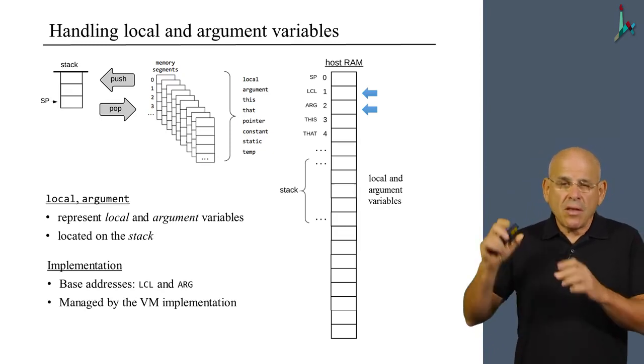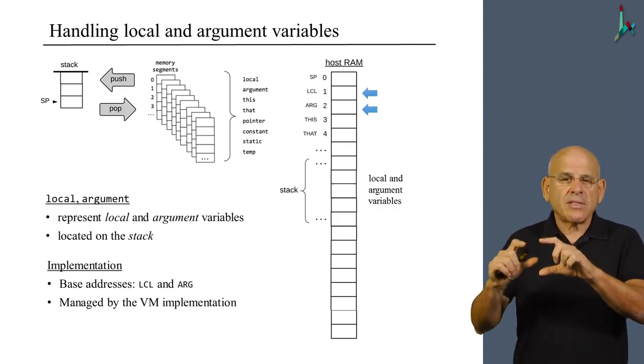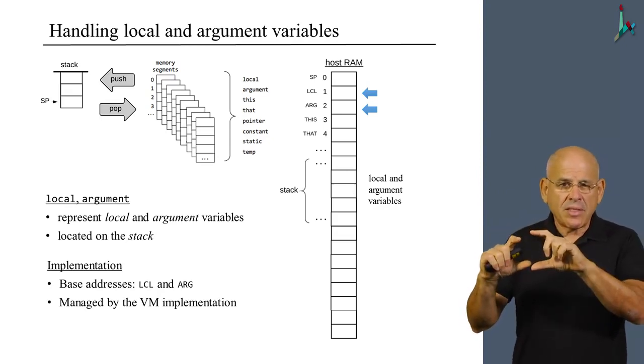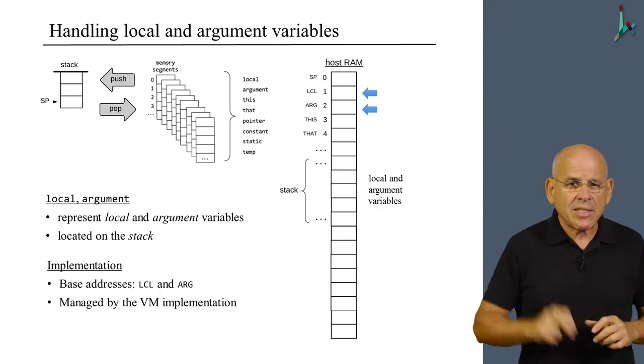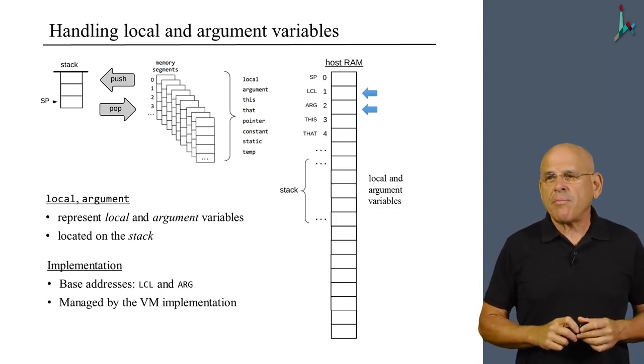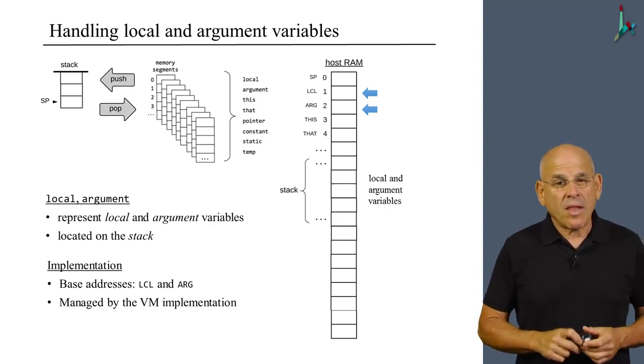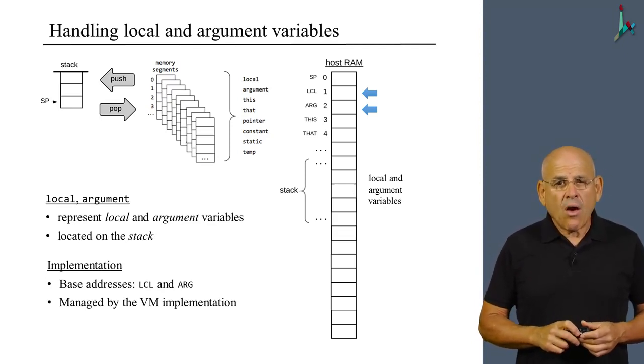The way the VM implementation records the location of these segments on the stack is by using the two pointers, LCL and ARG. The VM implementation puts, for example, the local segment in a certain area in the stack and records the base address of this segment in the LCL pointer, and does exactly the same thing with the argument segment.